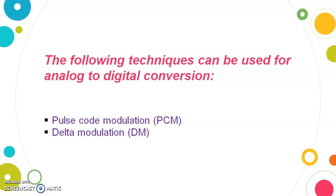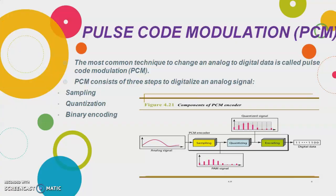Pulse Code Modulation is the most common technique to change an analog waveform to digital signal or digital pulses — that is why it is known as Pulse Code Modulation. PCM contains basically three steps: sampling, then quantization, and then encoding.